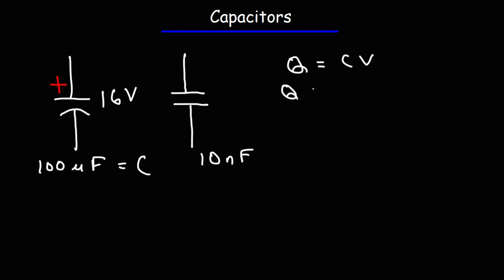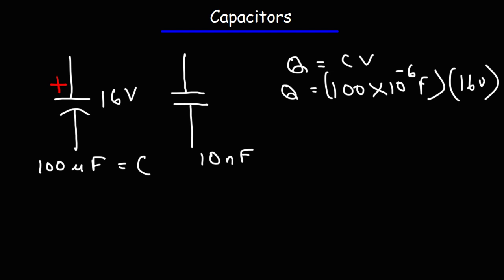For this capacitor, we have a capacitance of 100 microfarads, which is 100 times 10 to the minus 6 farads, and it's charged up to a voltage of 16 volts. Multiplying those two numbers gives us a charge of 1.6 times 10 to the minus 3 coulombs.